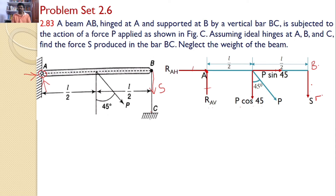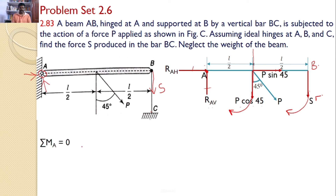Only P cos 45 and S will introduce moments. P cos 45 acts at a perpendicular distance of L/2 from point A, and S acts at a perpendicular distance of L from point A. Both P cos 45 and S create moments in the clockwise direction. Taking moments about point A: P cos 45 × (L/2) + S × L equals zero.